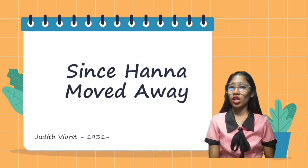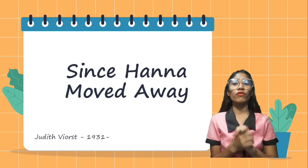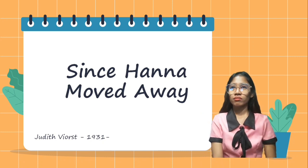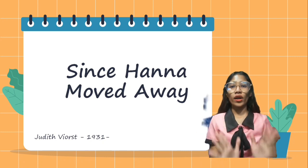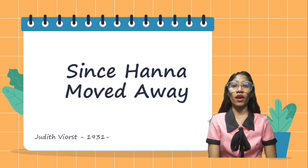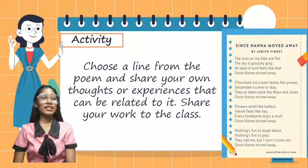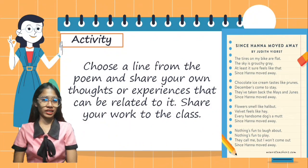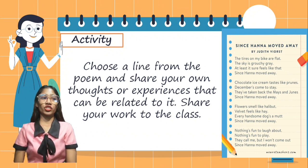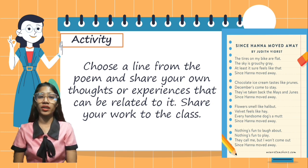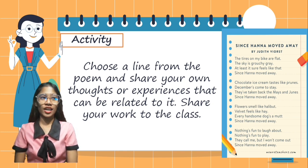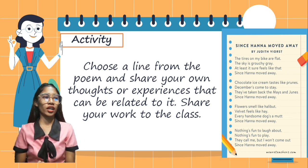Indeed, you understand the poem. The poem is all about a friend or someone close to you who went far away. And of course, when someone close to you went far away, you will really feel sad and you will really miss them. At this point, it is an individual activity. The instruction is: choose a line from the poem and share your own thoughts or experiences that can be related to it. Share your work to the class if we still have time.